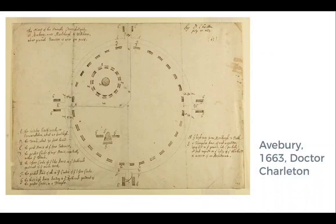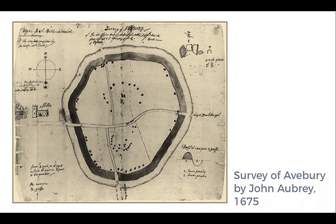Going back in time to Avebury. This is one of the earliest known depictions of Avebury, from 1663. It is inaccurate — viewed from the top down, it is in theory measured, but it reproduces a landscape as it might have been. Then there is another, quite famous survey of Avebury by John Aubrey in 1675, showing us the very beginnings of antiquarian study of landscapes. Here you see an attempt to show the northing of the monument, a profile drawing, and hash mark-style shading beginning to form.